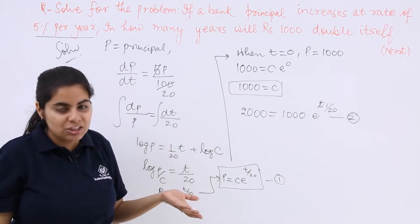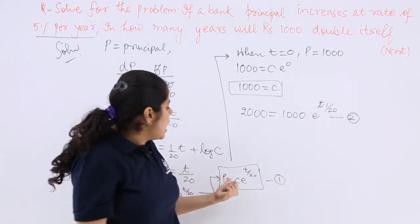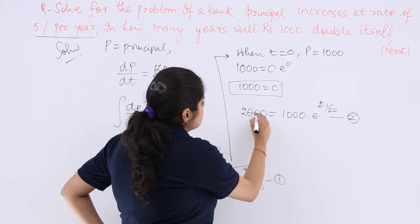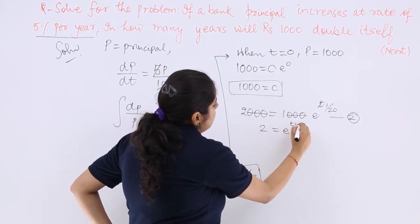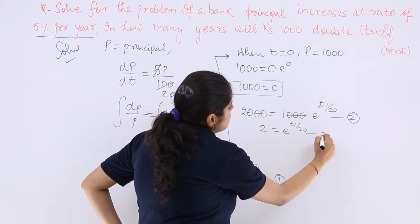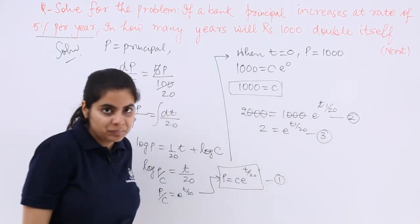Rest everything is very clear to us. So that means I can easily say this cancels, this cancels. So 2 equals e^(T1/20), which is equation number 3 probably.